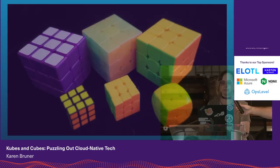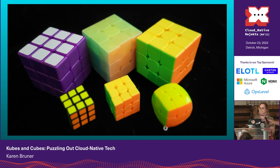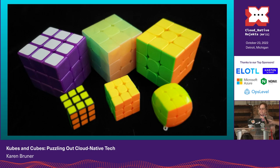So here's our standard cube. These are all actually the same — all three layers, three by three by three. They just are different colors, different sizes, but they all move and solve the same way. So maybe you have a generic cluster, but you're running it in different cloud environments, little things like that.